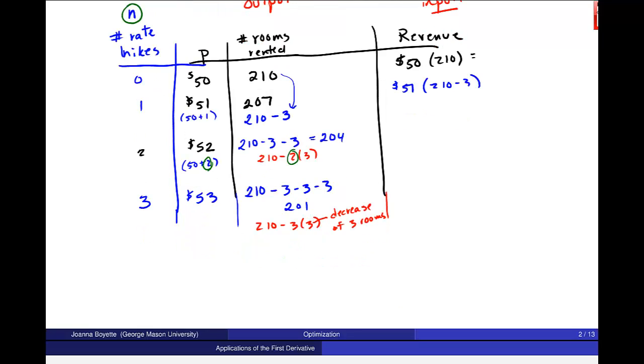Let's go down, let me do one more. And then we'll try and write this general pattern. If I raise the price 4 times, it's 54, 210, and I have to subtract 3 four times. Which in terms of this pattern that I'm trying to create, it's like that. And we said the revenue is this P, $54, times whatever this 210 minus 4 times 3, times the number of rooms rented.